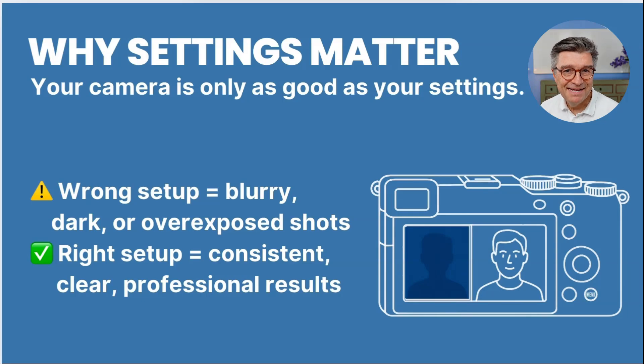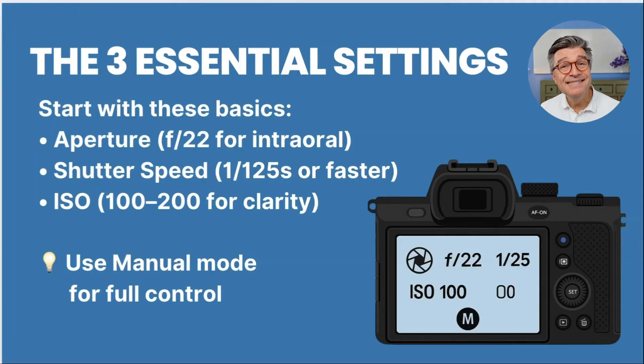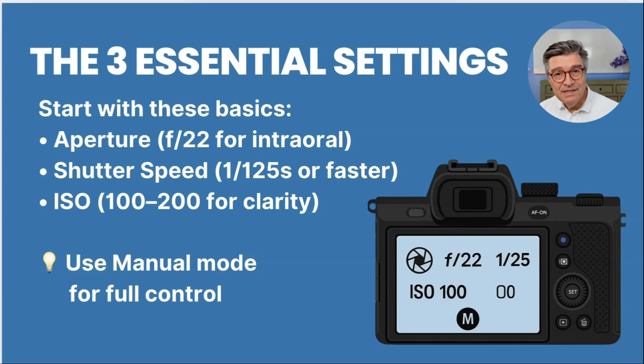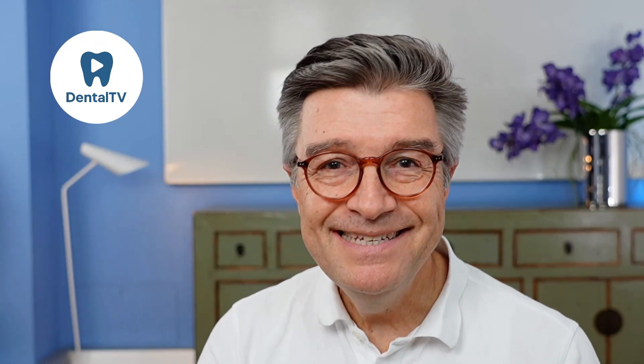Why do these settings matter? Your camera is only as good as the settings you're using on it. Wrong setup gives you blurry images, wrong colors — everything is messed up. The three essential settings start with the exposure triangle: aperture, shutter speed, and ISO. Set your camera to manual mode, because only in manual mode can you control everything and get standardized, reproducible results. This works only when all automatic functions are turned off. The only part where I switch back from manual to TTL is the flash control.